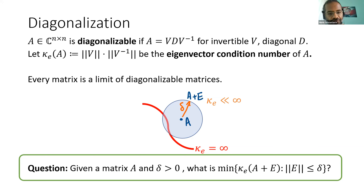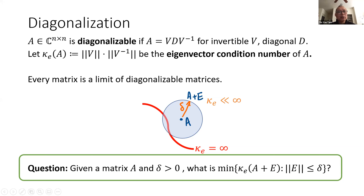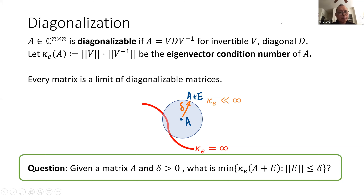A question from the audience: does the matrix V need to be unique in the diagonalization process? The answer: the way this is defined, you just take the best one — the infimum over all choices.